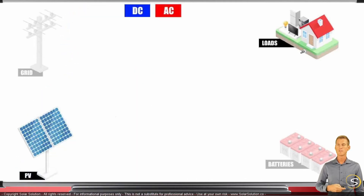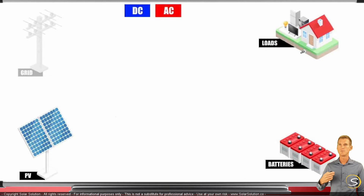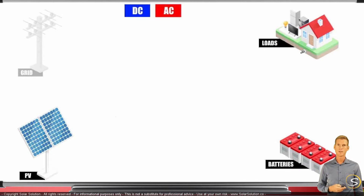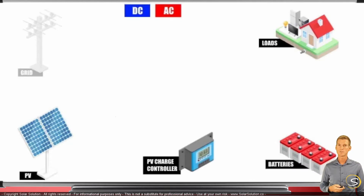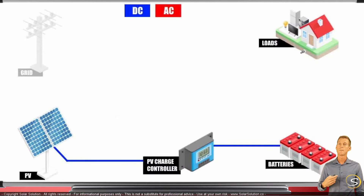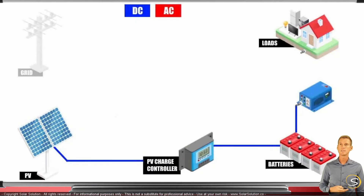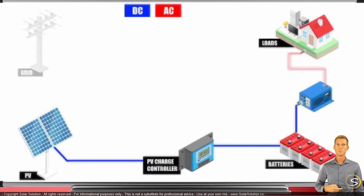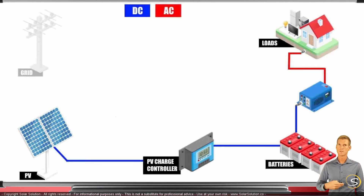In this off-grid scenario you would have batteries installed in your system, your solar array, and you're consuming electricity in your house through your loads. You would connect your solar panels through a DC-to-DC solar charge controller — a PV charge controller — to your batteries. Then you connect your batteries through an inverter that converts DC to AC into your house. This would be an off-grid solar energy system with battery energy storage.